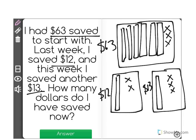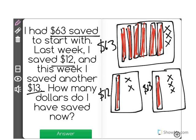Well, now all we have to do is count this up. I'm going to count by 10s first: 10, 20, 30, 40, 50, 60. Notice how I'm coloring them in to help remember that I've already counted them. 70, 80. So I have $80 in 10s.